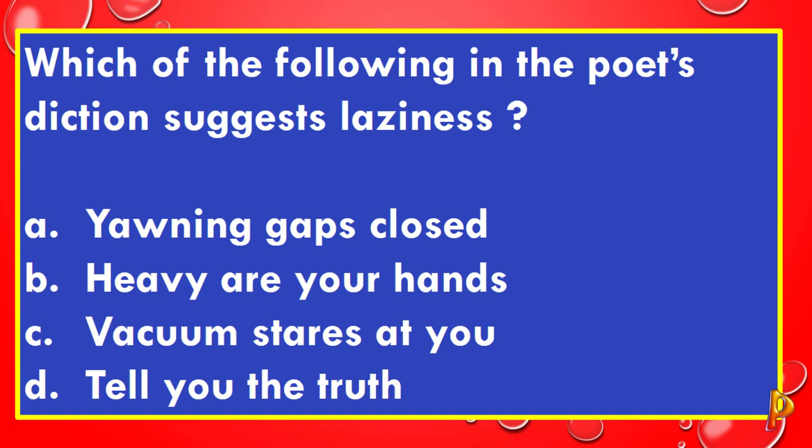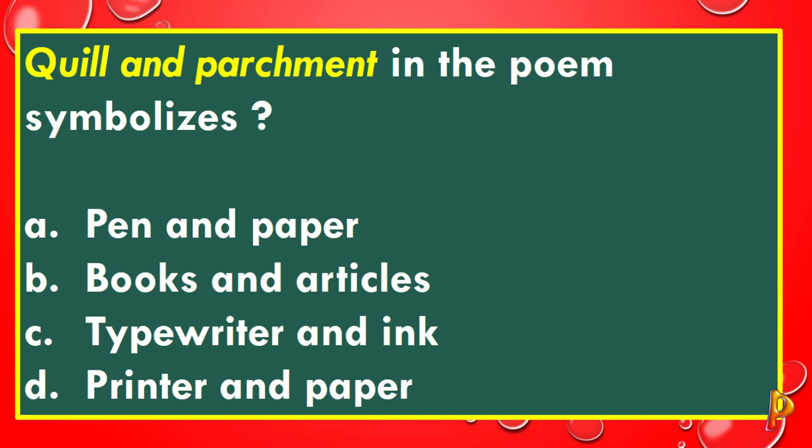Quill and parchment in the poem symbolizes: A: Pen and paper. B: Books and articles. C: Typewriter and ink. D: Printer and paper. The correct answer to this question is A, pen and paper.